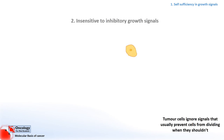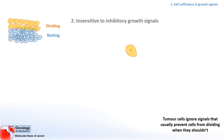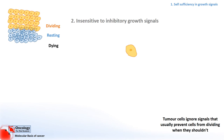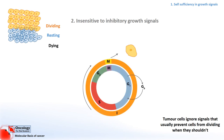In normal tissues, cells tend to be doing one of three things: resting, dividing, or dying. Tissues, which are collections of cells, need to maintain their size by matching the rate at which cells are dying with those that are dividing. Tissues regulate this process by controlling how many cells enter something called the cell cycle. The cell cycle is a process the cell needs to go through in order to divide. The different stages represent what is going on inside the cell.